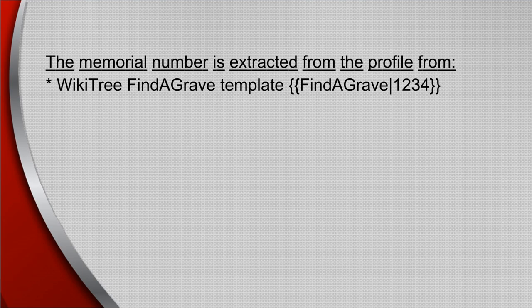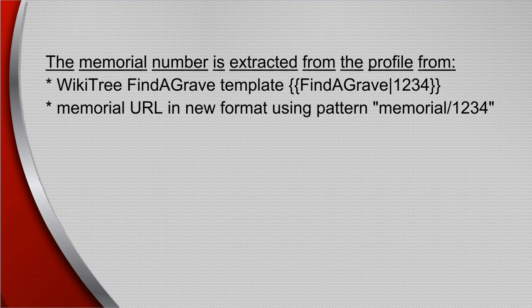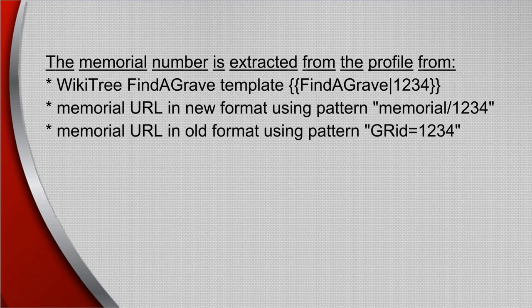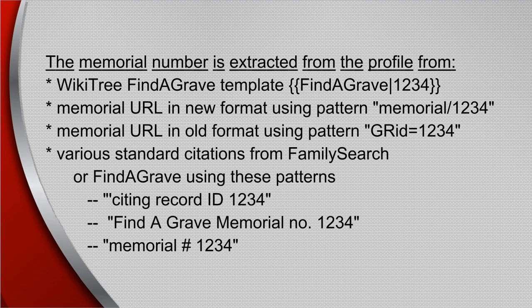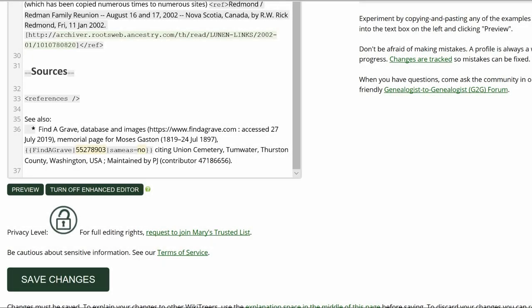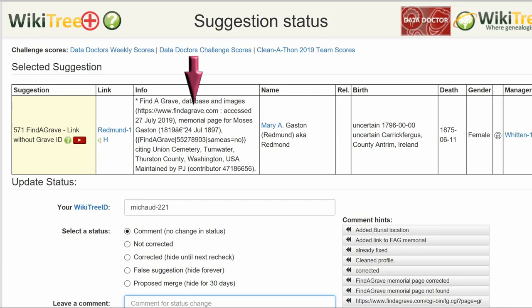There are several ways WikiTree detects a Find a Grave Memorial ID on a profile: the WikiTree Find a Grave template, the memorial URL in its new format, the memorial URL in its old format, and various standard citations from FamilySearch or Find a Grave. If the Find a Grave URL is found in the biography, WikiTree looks for a memorial on Find a Grave. If none is listed, as in the case with the first URL in the Find a Grave source, then a suggestion is generated.